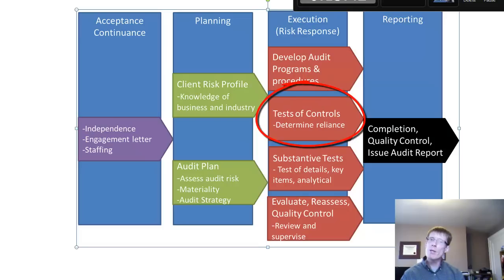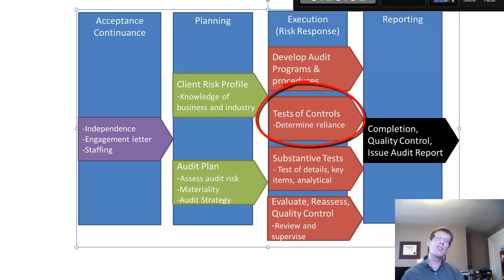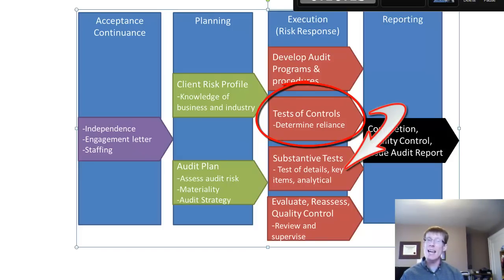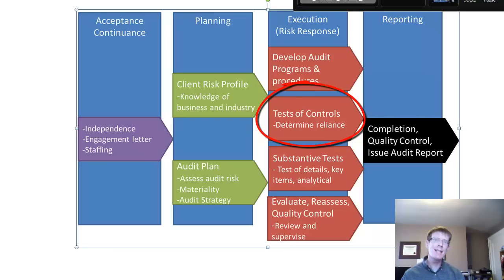A combined audit approach requires that we test controls and gather substantive evidence. A test of control is performed by looking at a documented control that is important to the integrity of the client's financial reporting system. If we can prove that that control has functioned as designed and effectively throughout the period, then we can reduce the amount of substantive evidence we need to collect. Generally, this is a more efficient approach and one that is absolutely necessary for large, complex multi-billion dollar companies.